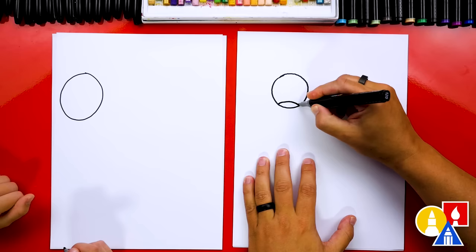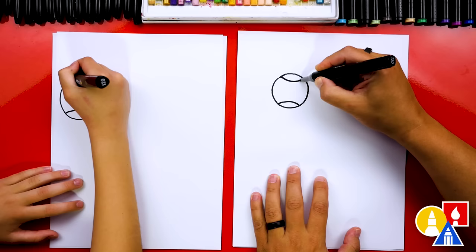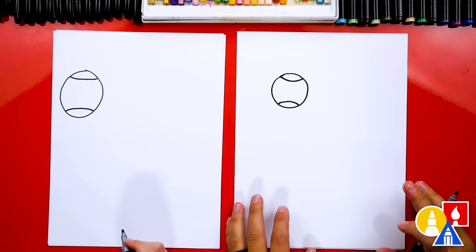And now let's draw the seam on our baseball. We'll draw the first one at the bottom, and then we'll draw another one up here at the top. And then we're going to add stitching later with a red marker.